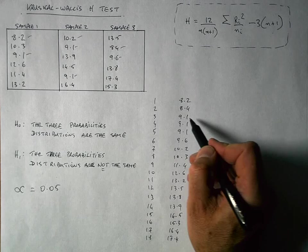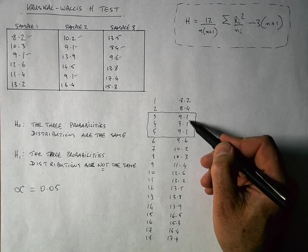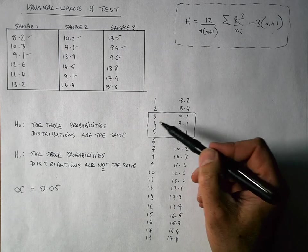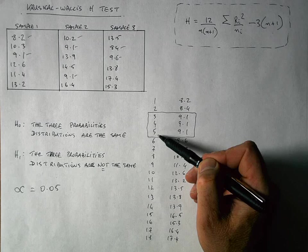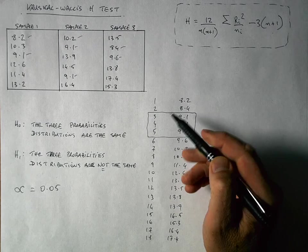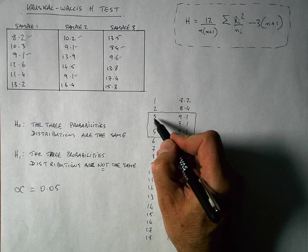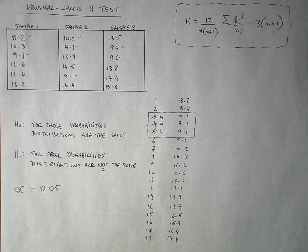Now, as I mentioned, we've got ties here in this section here in the center. I've got three values of 9.1. And I can't use rankings of 3, 4, and 5. So what I do here is I just take the average or the mean of those three values. So 3 plus 4 is 7, plus 5 is 12. So dividing those by 3, I will get rankings of 4, 4, and 4 here.